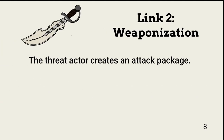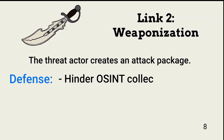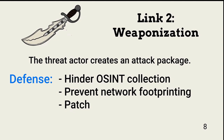The next link in the chain is weaponization. This is the point at which the threat actor uses reconnaissance information to create an attack package that has a high probability of success. There isn't much an organization can do to break this link. A step that can make it harder, in addition to the steps to hinder OSINT collection, is keeping systems and their applications patched, reducing the attack surface and making weaponization more difficult. If target objectives don't provide enough value based on the effort, the threat actor is likely to move on to another target.